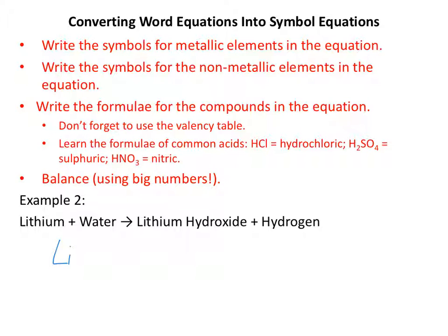Symbols for the non-metallic elements in the equation. Well, the only non-metallic element is hydrogen. Is hydrogen diatomic, which is the question we always have to ask ourselves. Is it in the magic 7? Well, it is diatomic. Hydrogen is H2. Write down the formulae for the compounds in the equation. Water, I hope that's nice and straightforward. We've got H2O. And then lithium hydroxide, we're going to need to use the valency table. Lithium has a valency of 1, hydroxide has a valency of 1. They're both the same. If they're both the same, we just have one of each. So, LiOH.